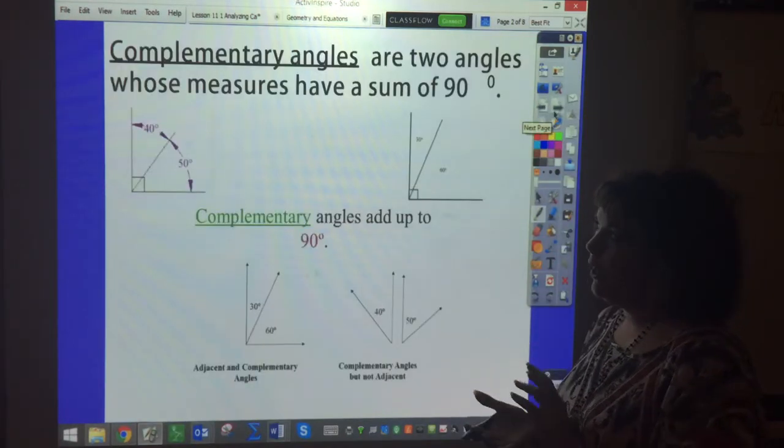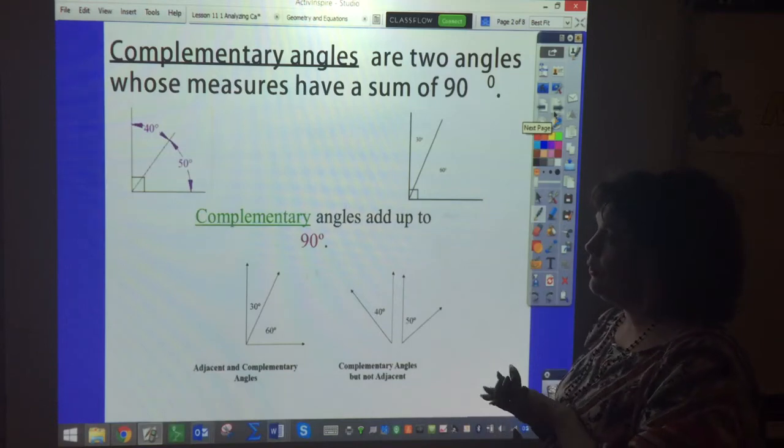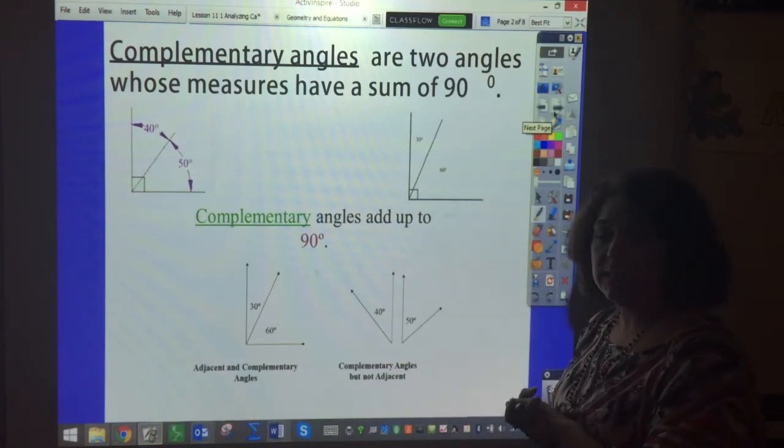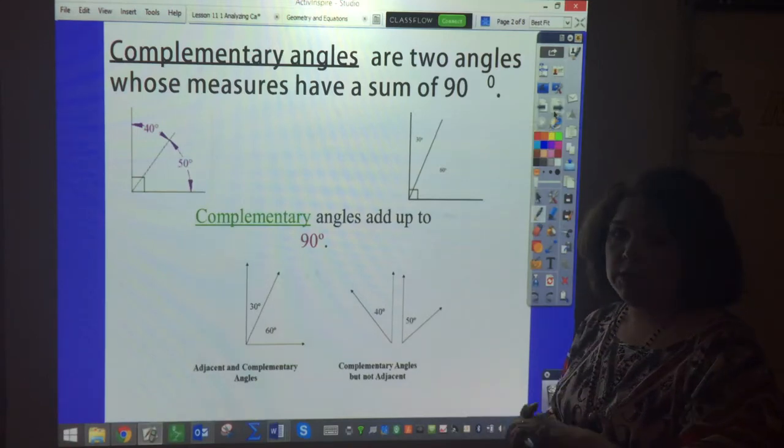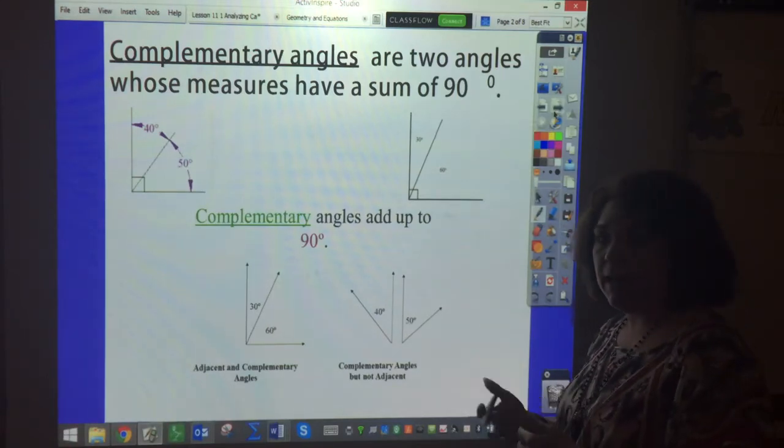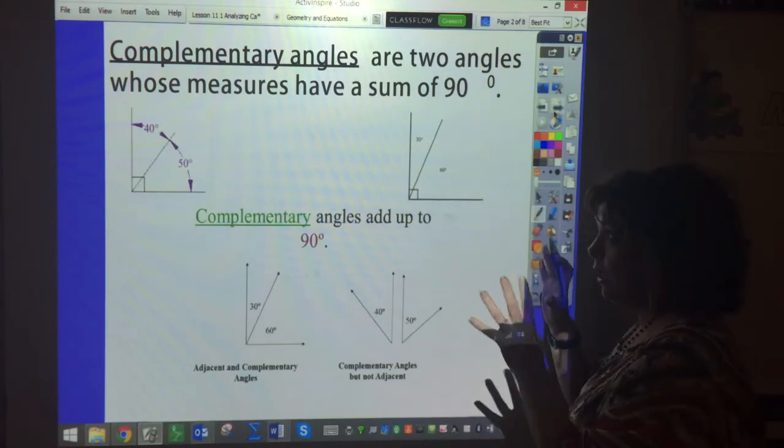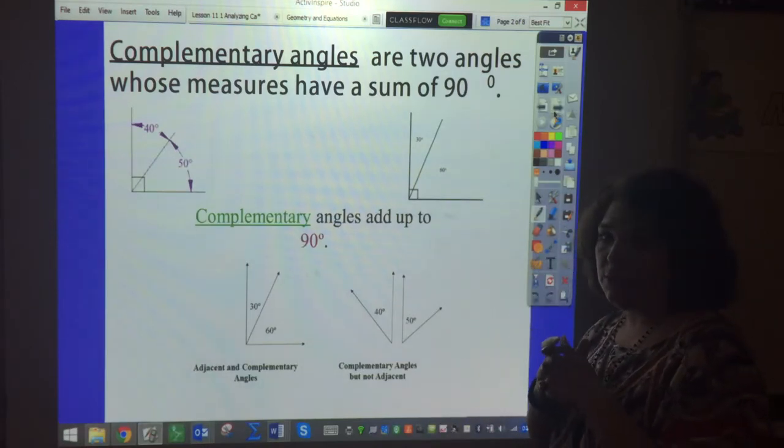So just as a refresher, complementary angles are two angles whose measures have a sum of 90. So it always adds up to 90 and this is going to be important to know. Just like you knew in triangles it added up to 180, you'll need complementary angles to add up to 90.